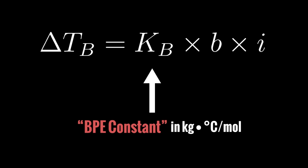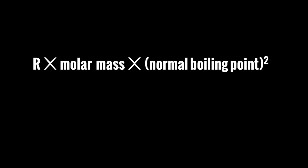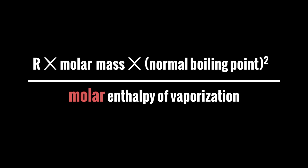You can calculate the BPE constant with a similar formula to the cryoscopic constant in Freezing Point Depression. You start out with R, the ideal gas constant — we talked about this in the ideal gas law video. Then we multiply that by the molar mass of the solvent, and then we multiply that by the square of the normal boiling point. Then we divide all of that by the molar enthalpy of vaporization, which is measured in joules per mole — it is the amount of joules needed to evaporate one mole of the solvent under normal conditions.